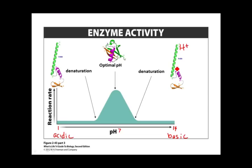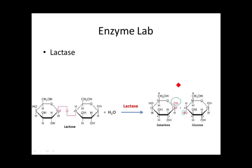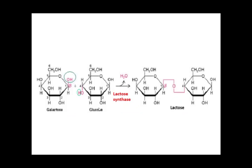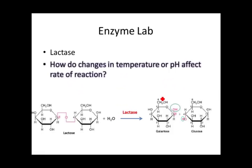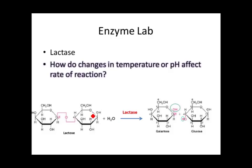In our enzyme lab, we're going to use lactase — the enzyme that breaks down lactose into glucose and galactose via a hydrolysis reaction. This is the opposite of what you did in a previous lab where you acted as lactose synthase and synthesized lactose from galactose and glucose. This week we'll explore how temperature and pH changes affect the rate of reaction using lactase.